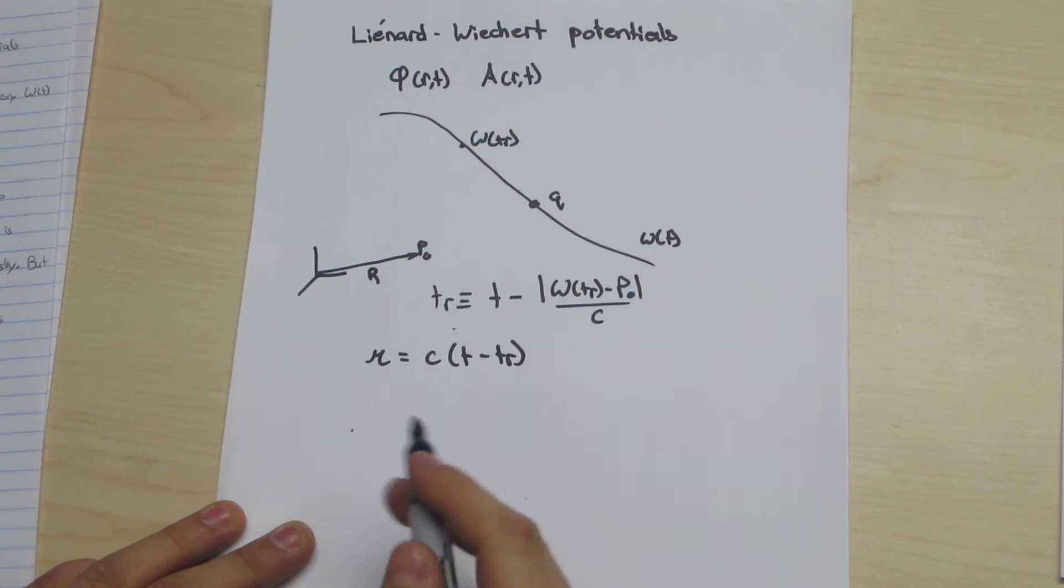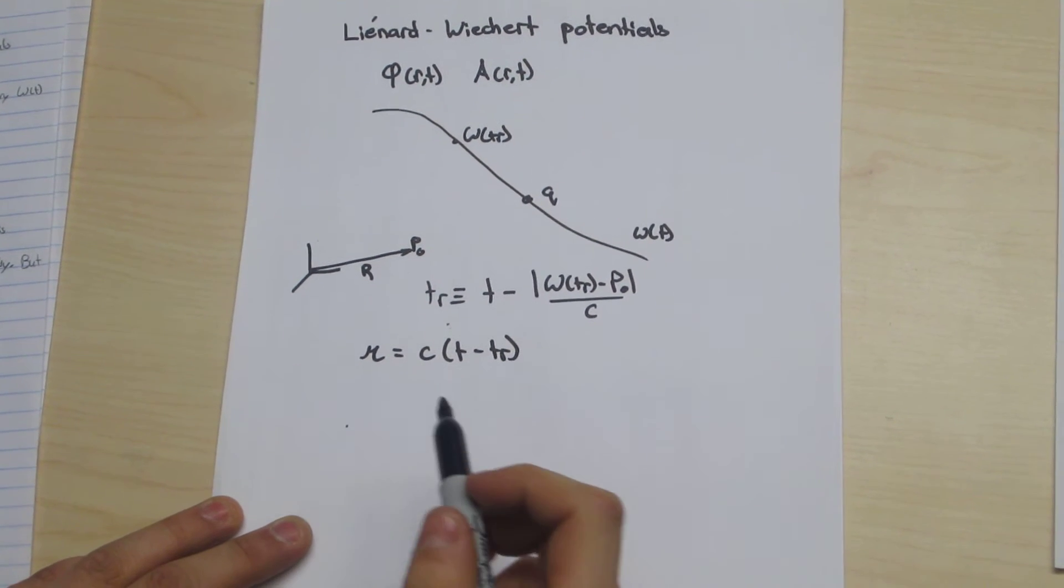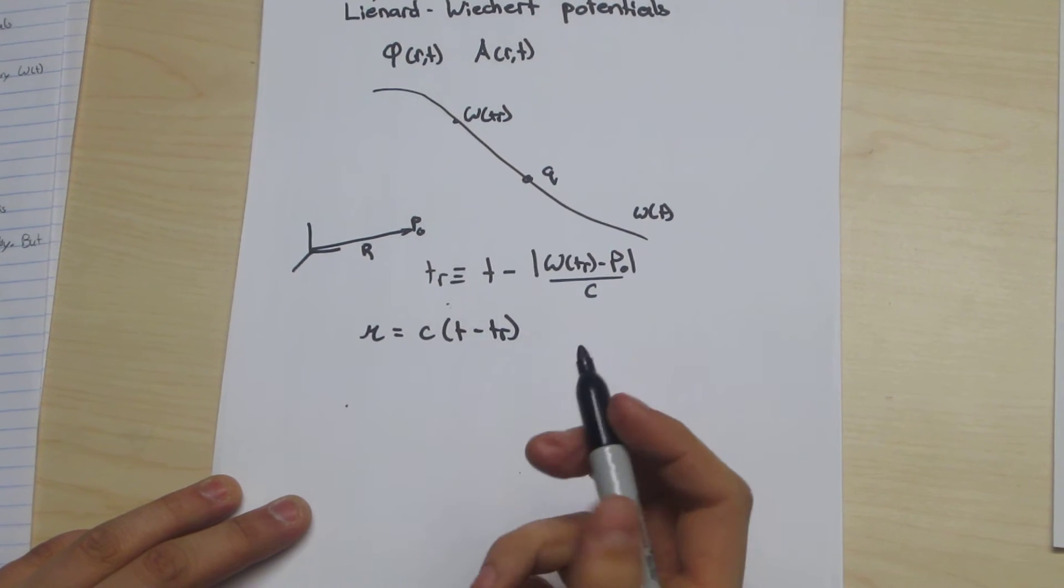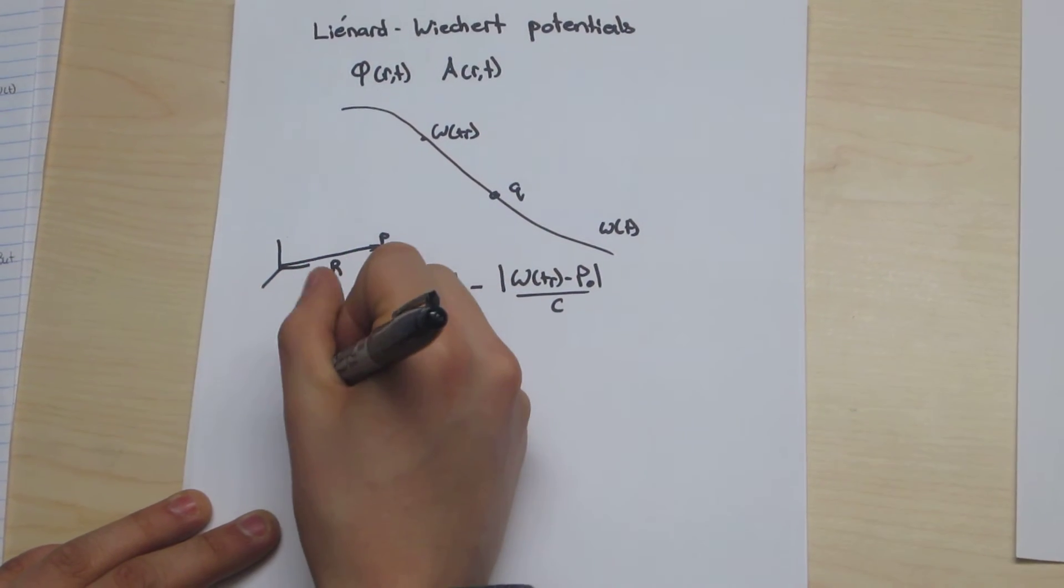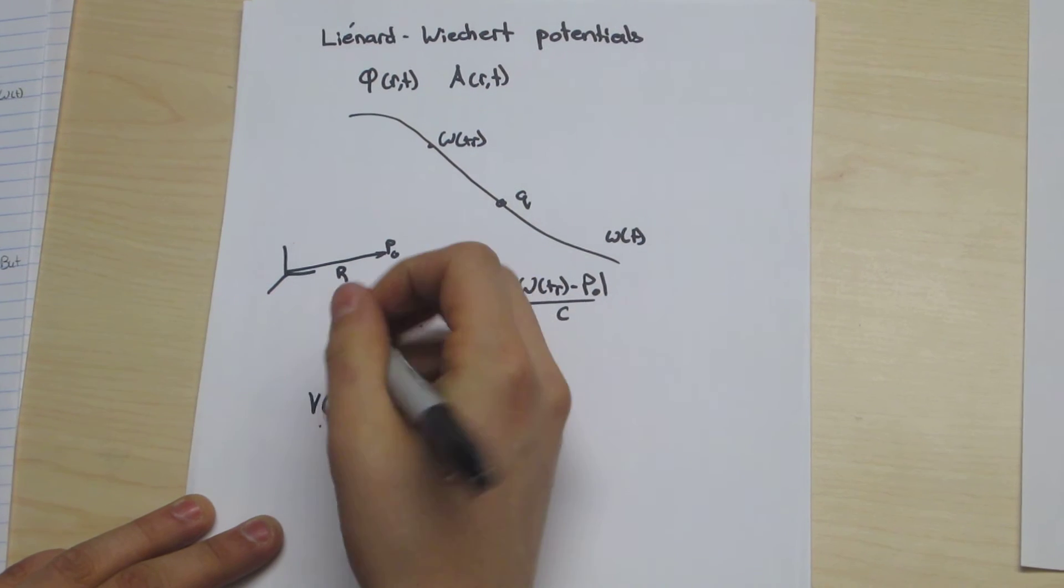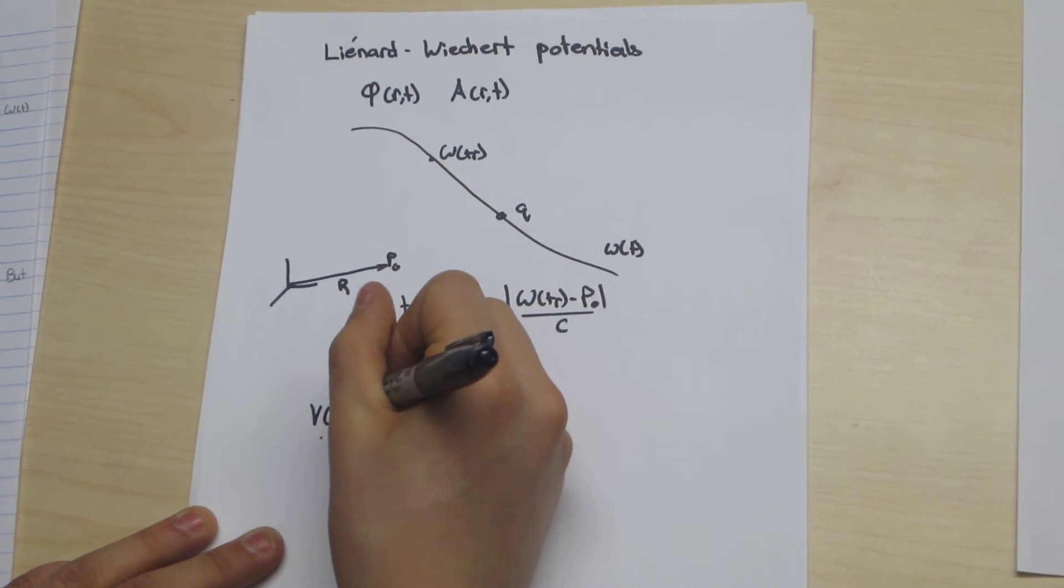Using this definition of retarded time and the potential equations previously derived, the scalar potential equation, I'm changing notation here from phi to v.